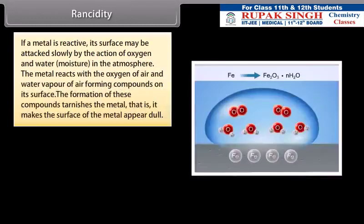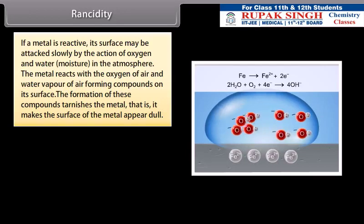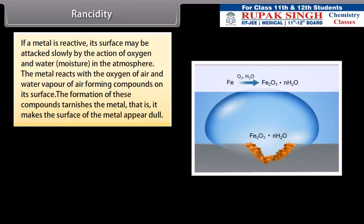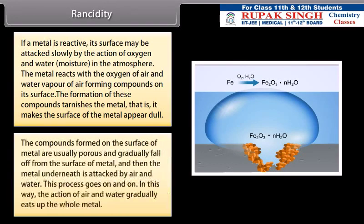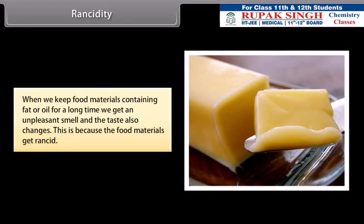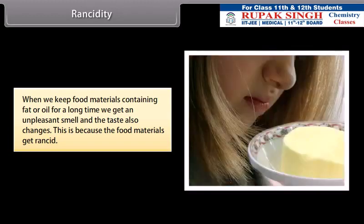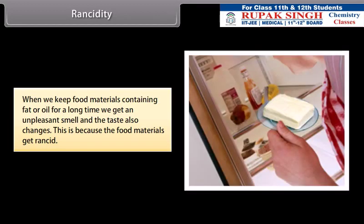Rancidity: If a metal is reactive, its surface may be attacked slowly by the action of oxygen and water in the atmosphere. The metal reacts with the oxygen of air and water vapor of air, forming compounds on its surface. The formation of these compounds tarnishes the metal, that is, it makes the surface of the metal appear dull. The compounds formed on the surface of metal are usually porous and gradually fall off from the surface of metal, and then the metal underneath is attacked by air and water. The process goes on and on. In this way, the action of air and water gradually eats up the whole metal. When we keep food materials containing fat or oil for a long time, we get an unpleasant smell and the taste also changes. This is because the food materials get rancid.